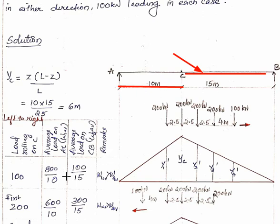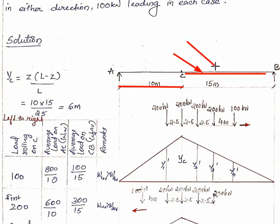We check whether W1av is greater than W2av. If the next load is the 200 kN load, we check the condition again. With 100 + 200 = 300 kN on AC (300 divided by 10 = 30), and the remaining load on CB is 500 divided by 50.